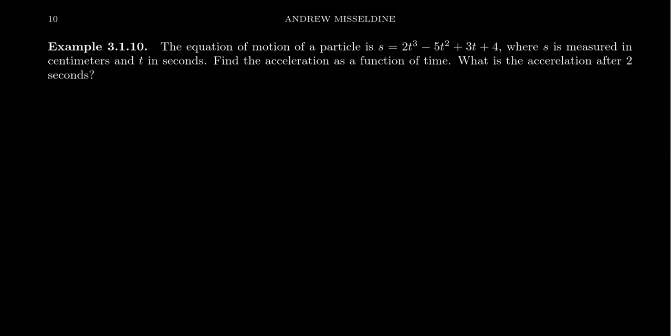In this video, consider the equation of the motion of some particle given as s equals 2t cubed minus 5t squared plus 3t plus 4, where s is measured in centimeters and t is measured in seconds. We want to find the acceleration as a function of time and then figure out what the acceleration would be after two seconds.